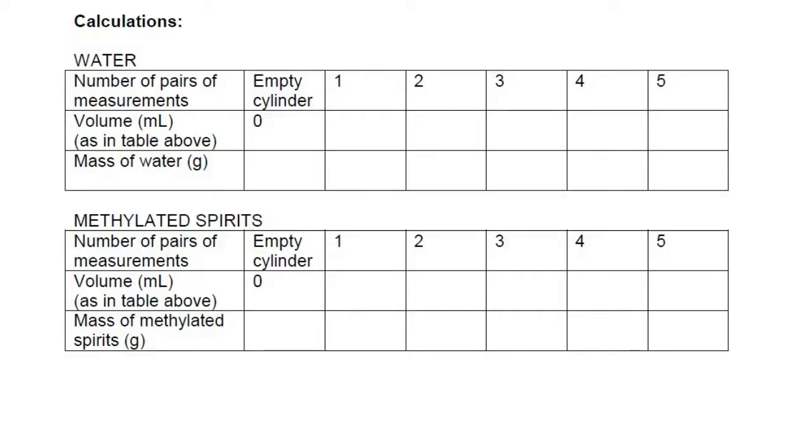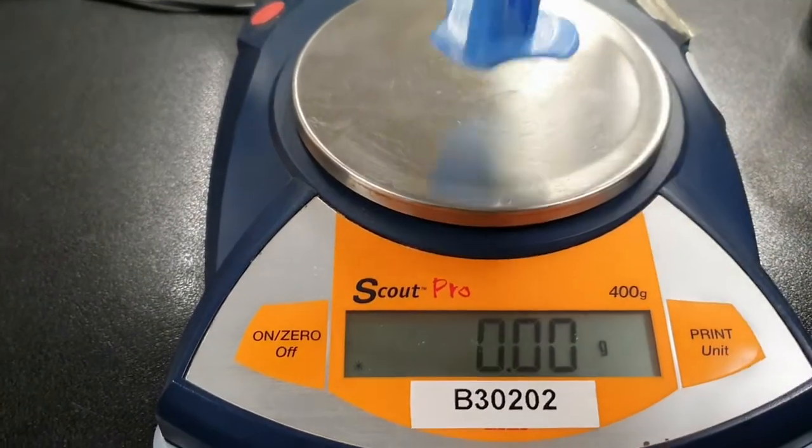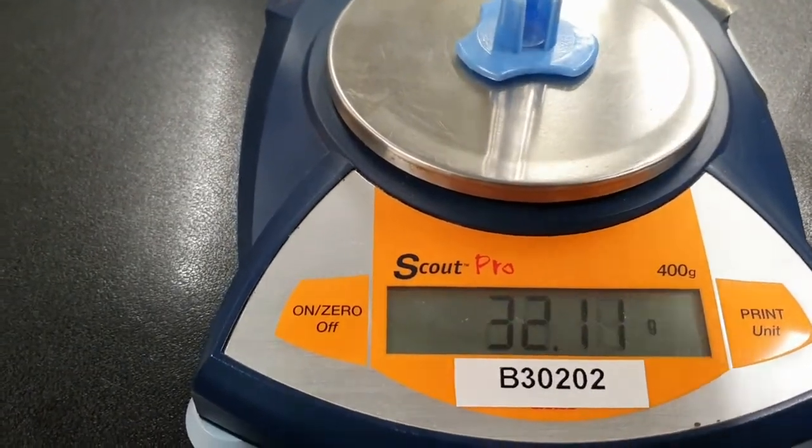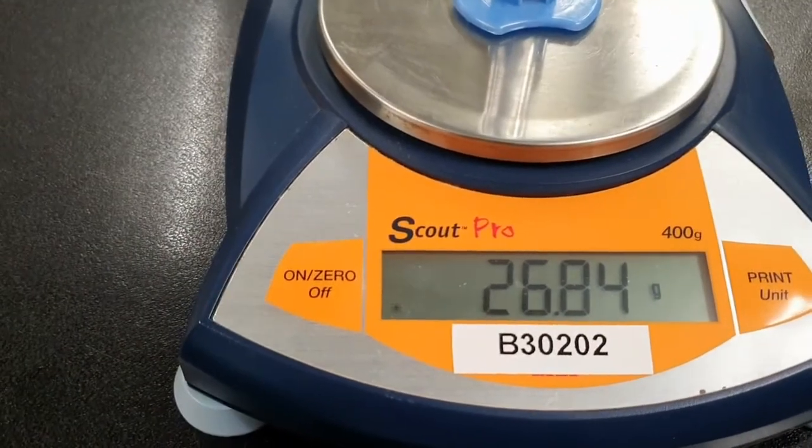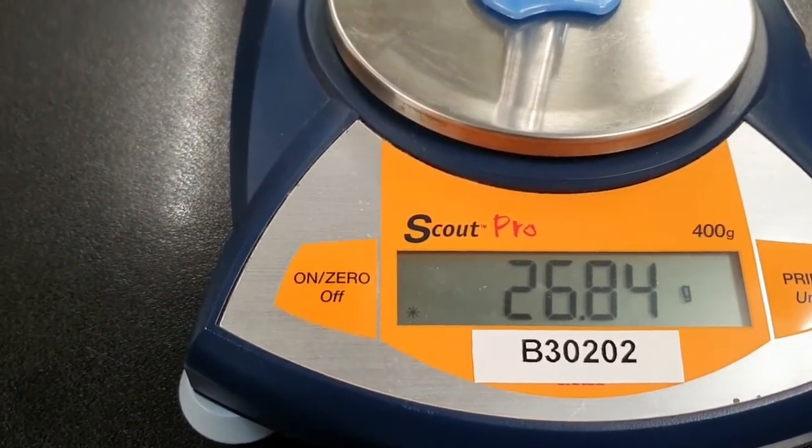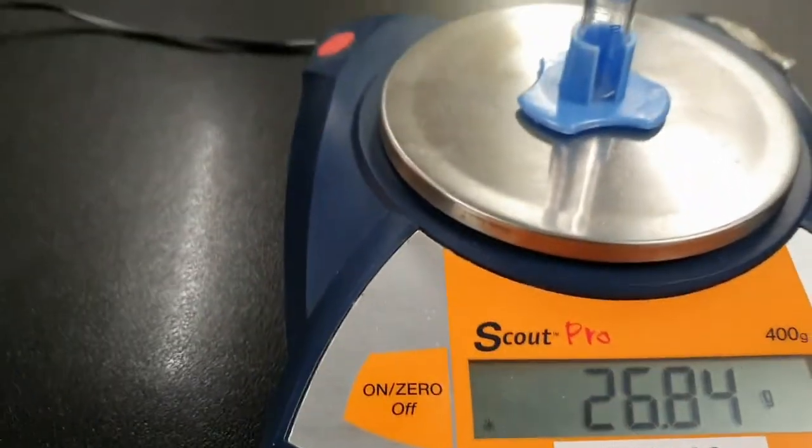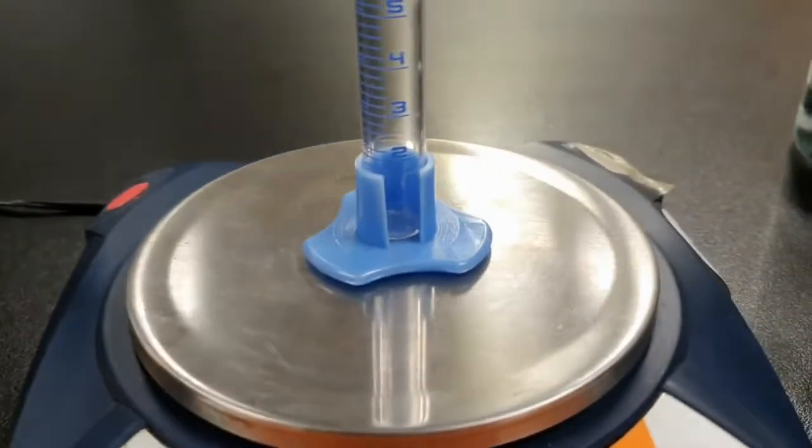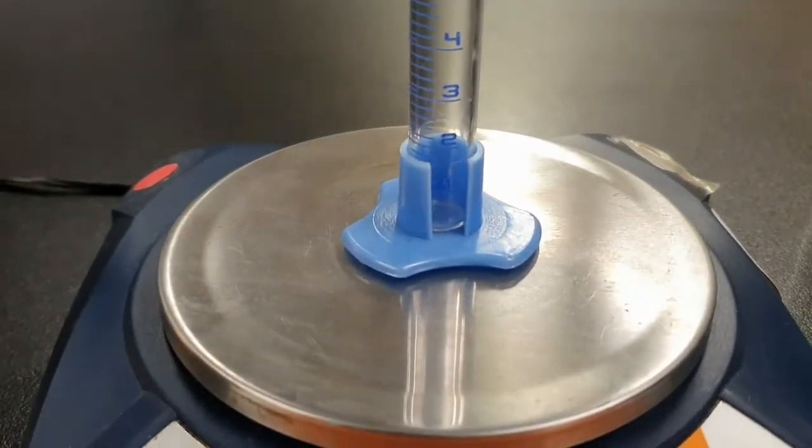To begin with, our method says using the electronic balance measure the mass of an empty cylinder. So you can see there we've got a figure of 26.84 grams. And that is with no liquid in the measuring cylinder.